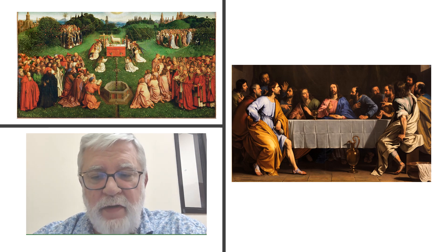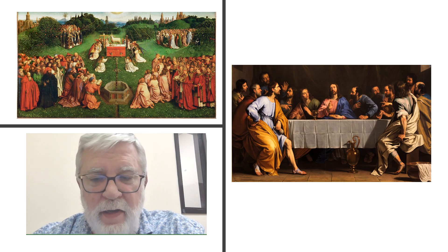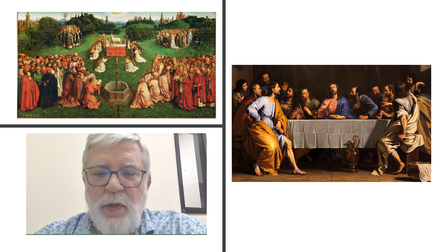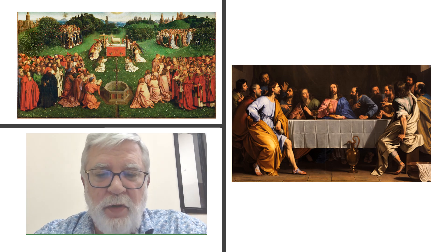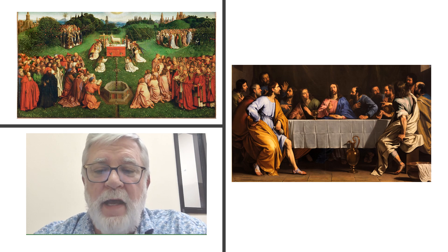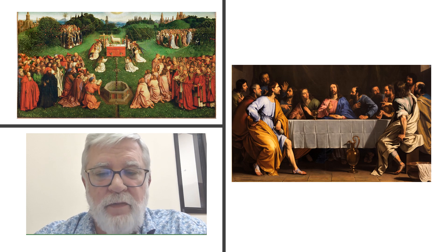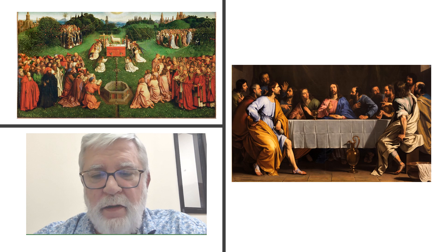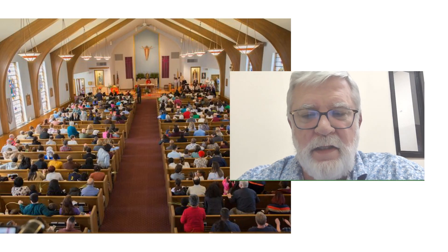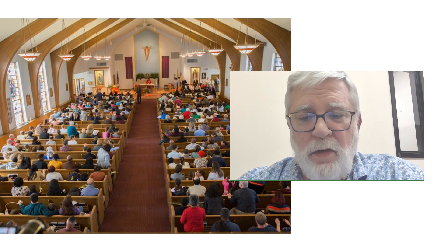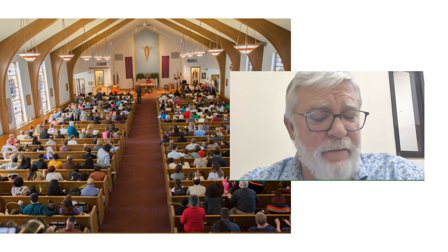at the Last Supper. They are at a very simple table and they are all wearing very simple clothes. In the top picture we can see a representation of the same meal being carried out in heaven as the Lamb's High Feast, or the Wedding Feast of the Lamb, as it's called in the book of Revelations. Around the altar there are all the angels and the saints and all the saved who are worshipping and feasting with Jesus, who is the Lamb.